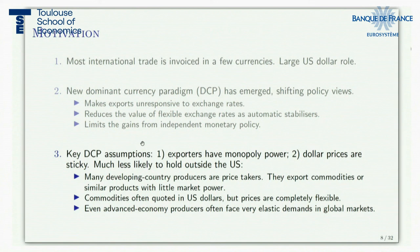I argue here that these assumptions are much less likely to hold outside the US. Many developing and emerging country producers tend to be price takers — they export commodities or commodity-like products with little, if any, market power. And when the prices of those products are quoted in dollars, those prices are flexible.